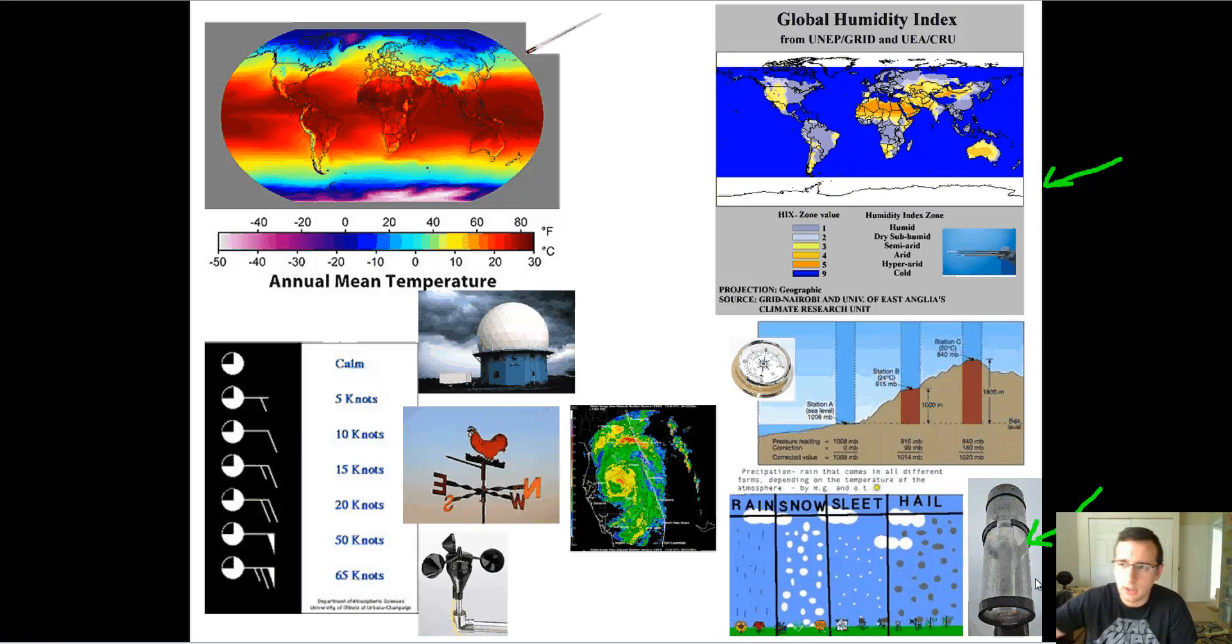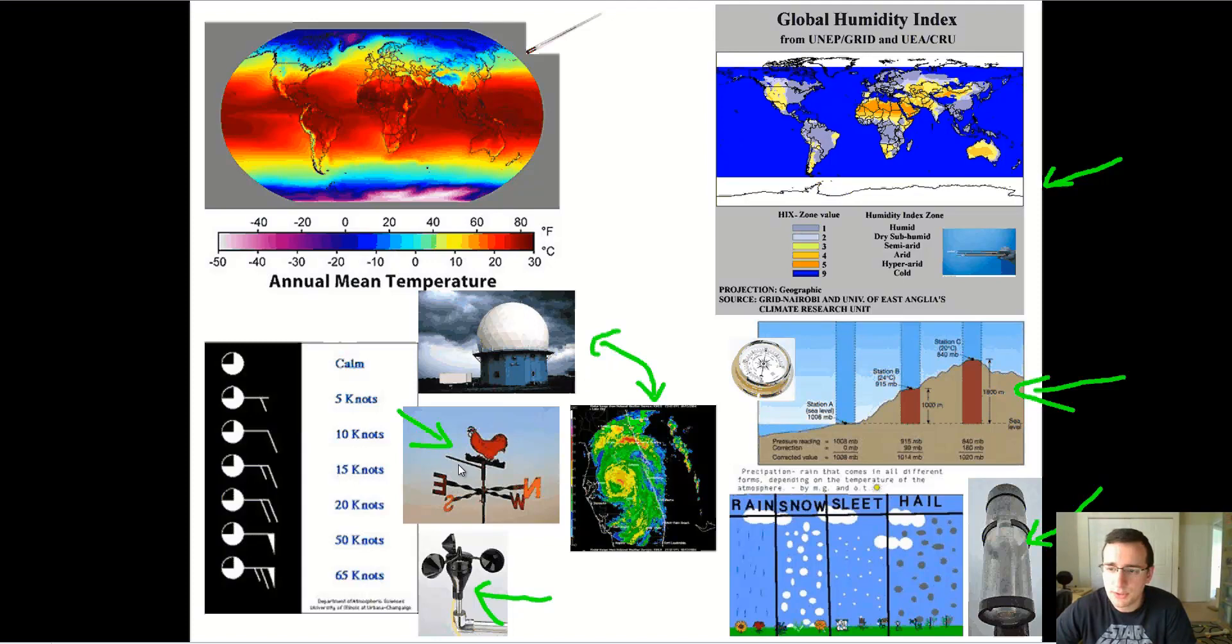They measure wind speed using wind gauges or anemometers, and they also measure wind direction. You see here an example of why they measured that. They also measure air pressure, which is measured with barometers. You have that there. And you also have cloudiness, which is how much cloud cover there is.